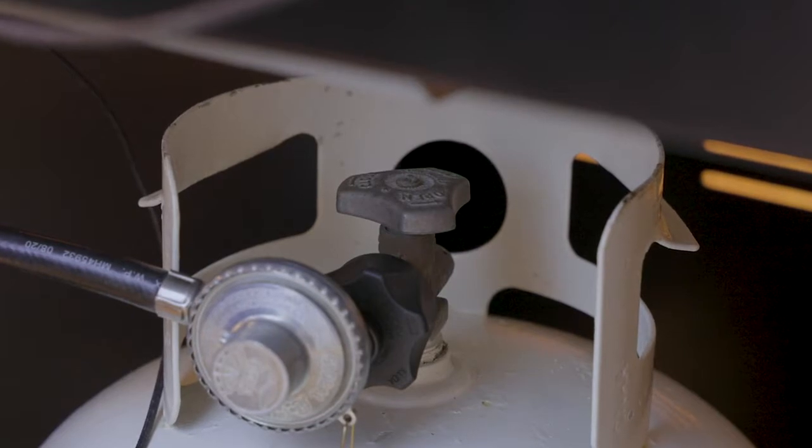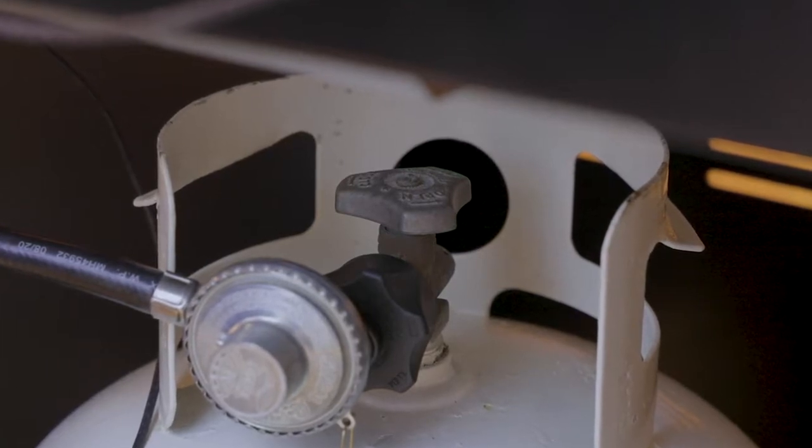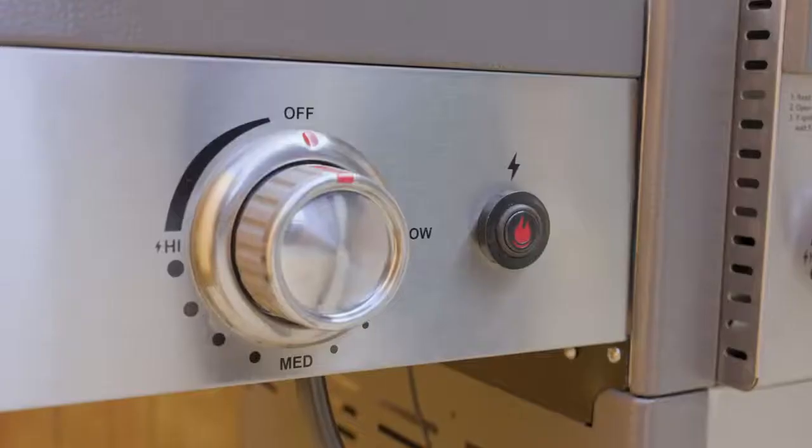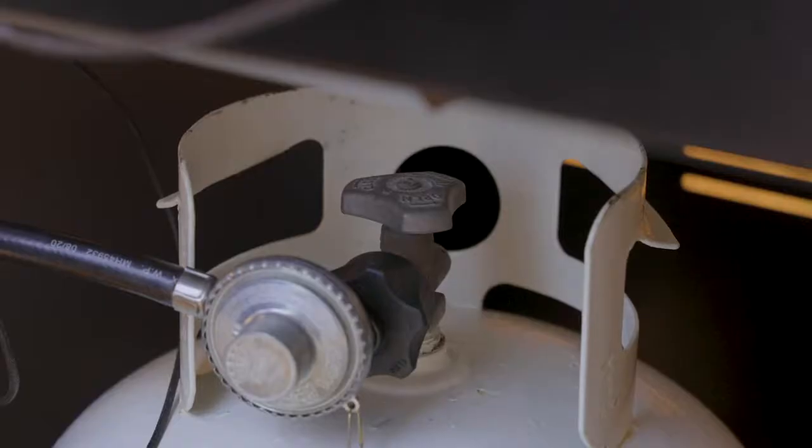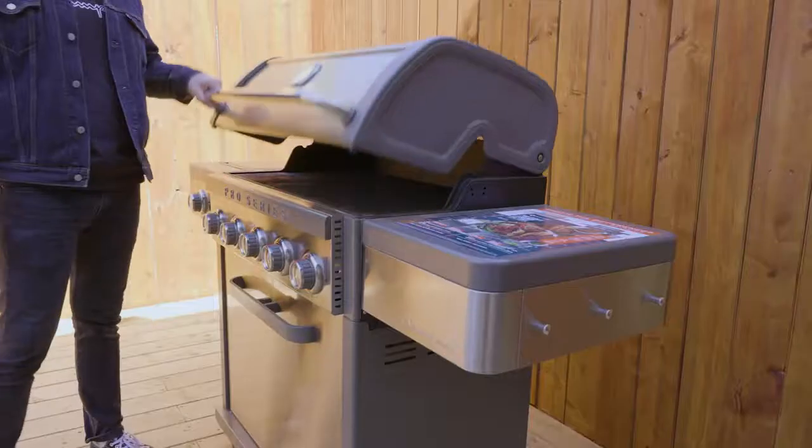Follow these steps to reset your regulator's flow-limiting feature. With all control knobs in the off position and the cylinder shutoff valve in the closed position, open the barbecue lid.